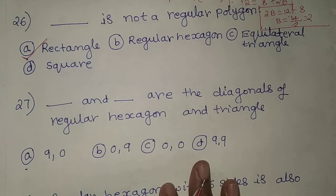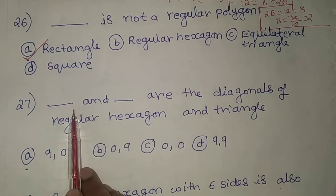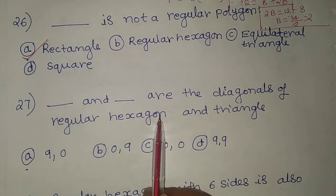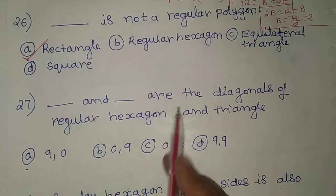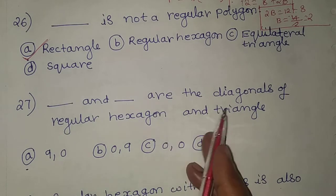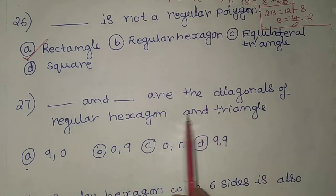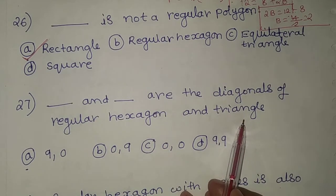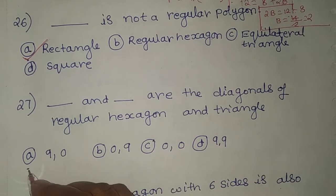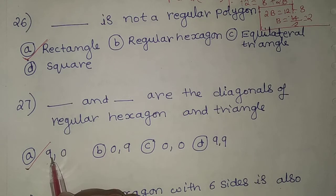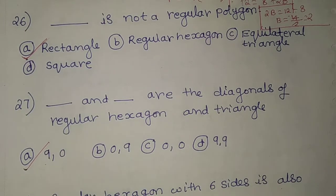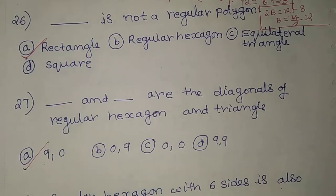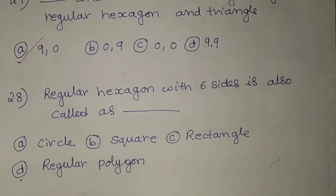The 27th problem: find the number of diagonals of a regular hexagon and a triangle. A triangle always has zero diagonals. A hexagon has nine diagonals. So the correct option is A — hexagon has nine diagonals and triangle has zero diagonals.